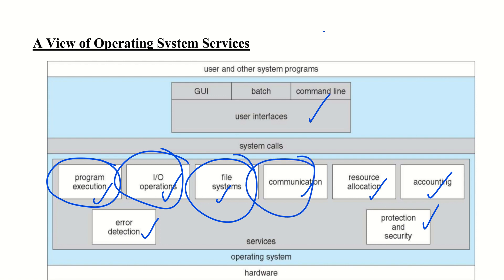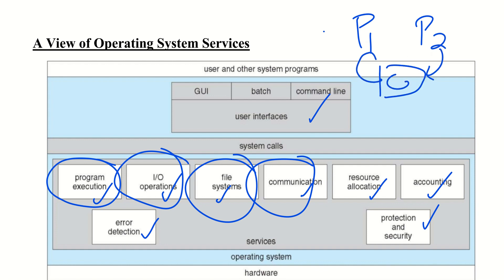Next comes communication. Communication means inter-process communication. Processes communicate either by using shared memory or by message passing. Two cooperating processes must communicate or exchange information, either on the same computer or between computers on a network. Communication may be via shared memory or through message passing.